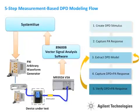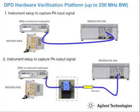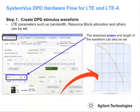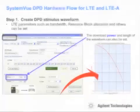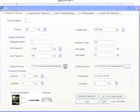SystemVue's digital pre-distortion library includes a wizard which allows us to easily perform digital pre-distortion analysis on standards such as LTE and W-band CDMA, as well as a user-defined mode which allows analysis using any modulation format. The first step in the DPD analysis process is creating the oversampled waveform.